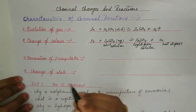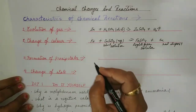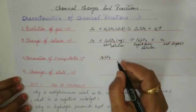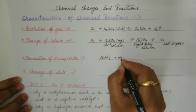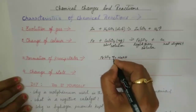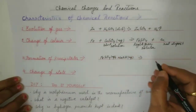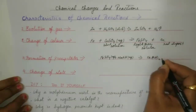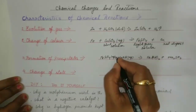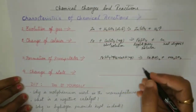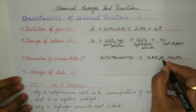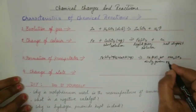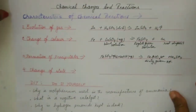The third characteristic is formation of precipitates. Ferrous sulphate plus sodium hydroxide (aqueous) gives ferrous hydroxide and sodium sulphate. Make sure it is balanced. Ferrous hydroxide is dirty green in color and forms as a precipitate, so this reaction shows the formation of a precipitate as a characteristic of a chemical reaction.